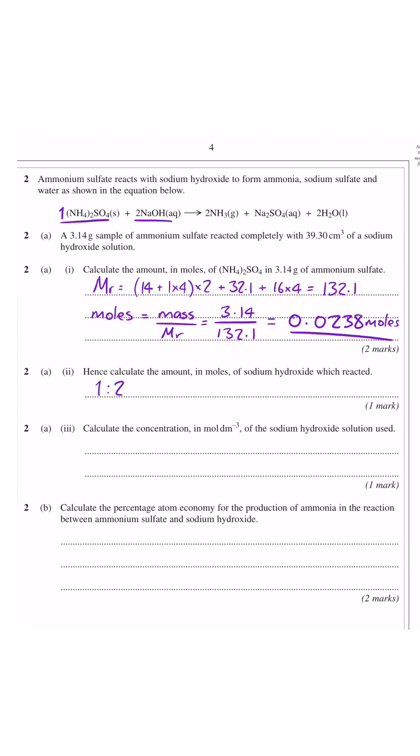For part 2 you look at the ratio of sodium sulphate to NaOH which is 1 to 2. So you times 0.0238 by 2 to give you 0.0476 moles.